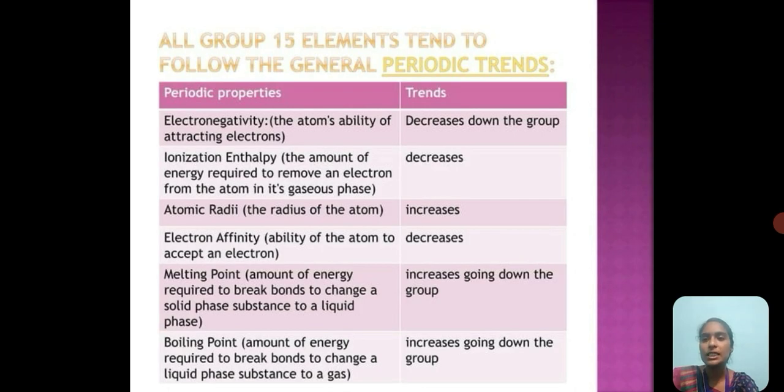Some basic characteristics of group 15 are given here. Electronegativity is the ability of the atom to attract electrons, and ionization enthalpy is the amount of energy required to remove an electron from the atom in its gaseous phase. The electronegativity decreases down the group, as well as the ionization enthalpy also decreases down the group. The atomic radii increase down the group. Electron affinity is the ability of the atom to accept an electron, which again decreases down the group.